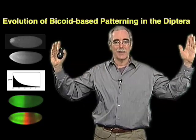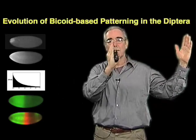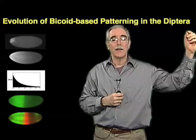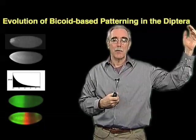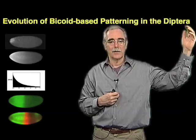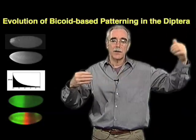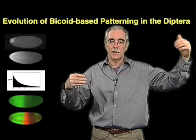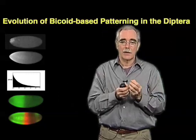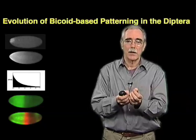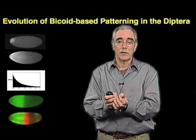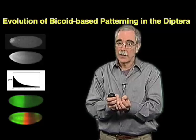If you want to establish hunchback expression up to 48% egg length, and you're doing that by having a gradient of a molecule that diffuses with a particular diffusion constant and establishes a particular constant shape in its distribution, as bicoid appears to do, then that mechanism for patterning would be very sensitive to variation in egg size.